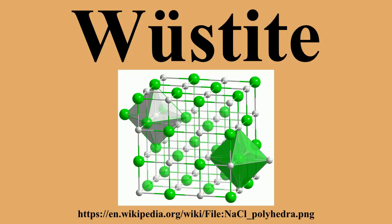Wustite is a mineral form of iron oxide found with meteorites and native iron. It has a gray color with a greenish tint in reflected light. Wustite crystallizes in the isometric hexoctahedral crystal system in opaque to translucent metallic grains. It has a Mohs hardness of 5 to 5.5 and a specific gravity of 5.88. Wustite is a typical example of a non-stoichiometric compound.